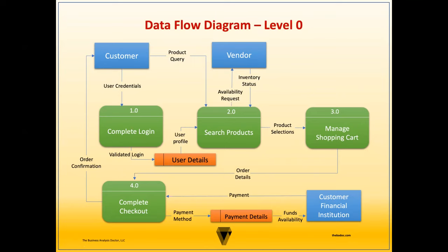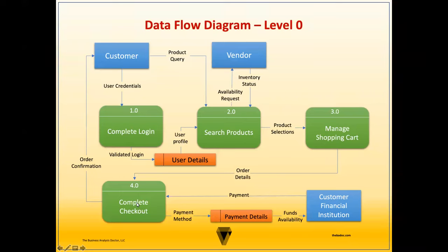We incorporate the same external entities and overall inputs from the context diagram, then add data stores and data flows between processes. The customer inputs user credentials to the login process, which validates the login. The user details data store sends the user profile to the interface, where the customer searches for products. A product availability request is sent to the vendor, who provides inventory status. The product selection goes to the shopping cart, and the total order details are sent to the checkout. The customer selects a payment method, funds availability is checked, and upon payment, an order confirmation is sent to the customer.